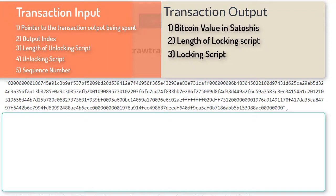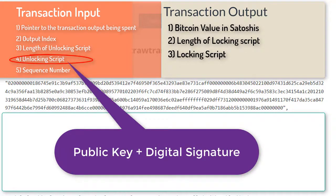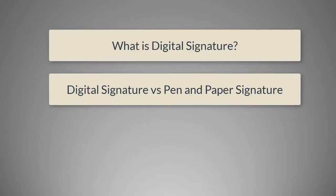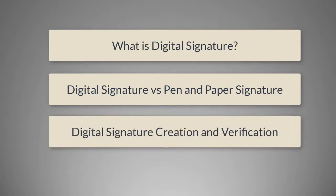In previous chapters and in this chapter we have covered transaction input in detail and we know that transaction input contains an unlocking script. This unlocking script is the combination of a public key and a digital signature. We have covered a lot about public keys earlier, but what is a digital signature? How do you compare a digital signature with our familiar pen-and-paper signature? How is a digital signature created and how is it used for verification? These most interesting topics will be covered in the next chapter.